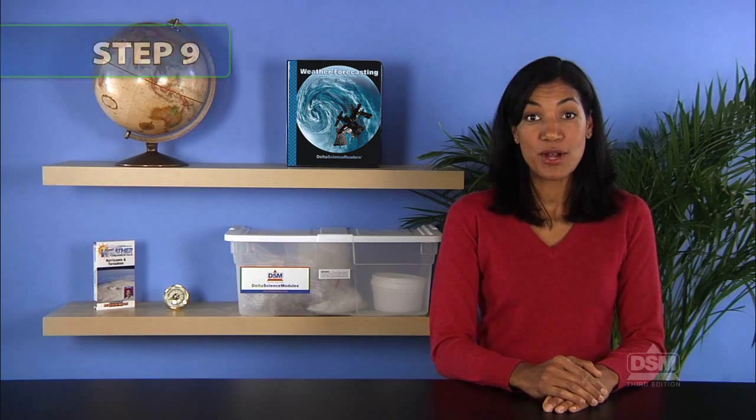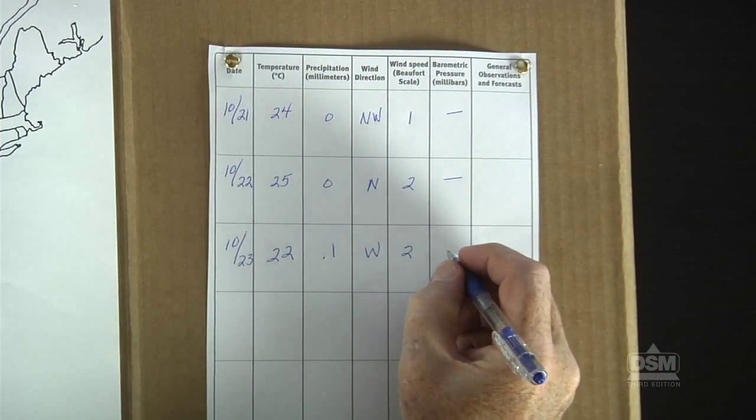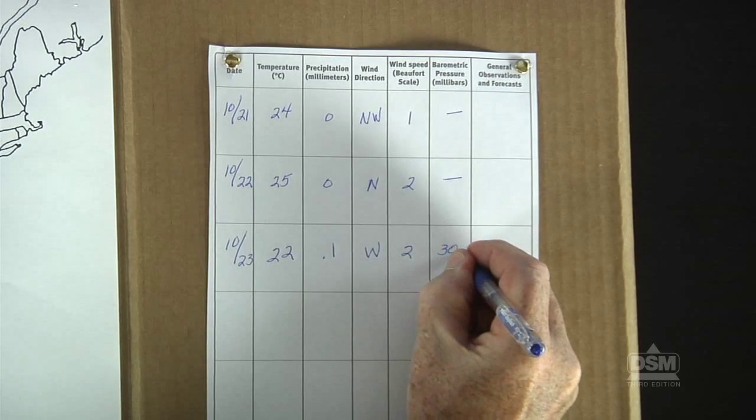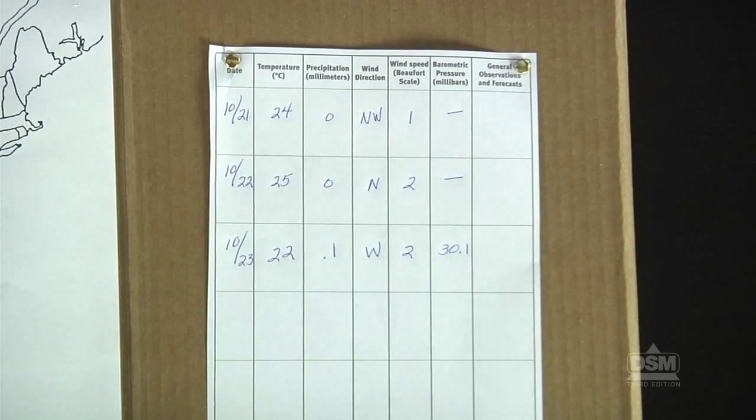Tell students that the barometer will be left in the classroom so that they can record the reading after every observation session and add this data to their weather stations under the Daily Weather and Observation section. Have the students add today's barometric pressure reading to the data collected during today's continuing observation session and post this data on their weather stations.